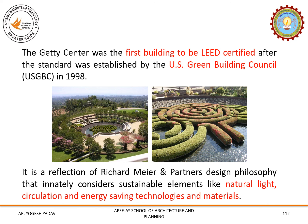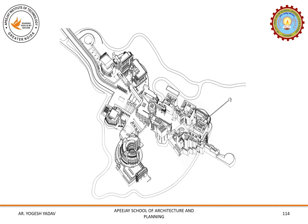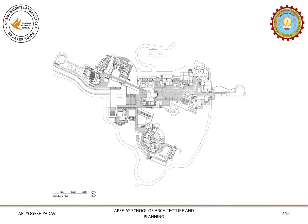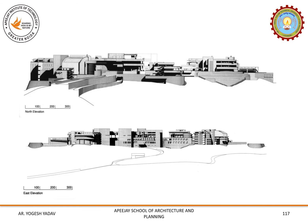The Getty Center is a reflection of Richard Meier and Partners' design philosophy that innately considered sustainable elements like natural light, circulation and energy saving technologies and materials. Now we will see the drawings of the Getty Center. This is the overall site plan, then the 3D view showing all seven components of the Getty Center, the layout plan at entry level, and the upper level plan showing various spaces. The elevations show the north elevation and the east elevation.